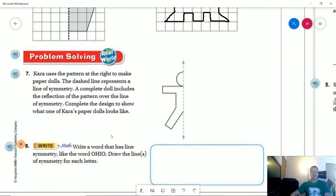Number eight, they wanted us to write a word with line symmetry like the word Ohio. Guess what? If you remember my rules for the class, if they give you a word like this, I will let you use it, because there's no point in taking the time to think of another word.